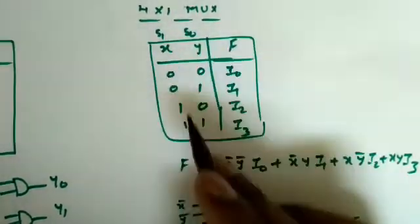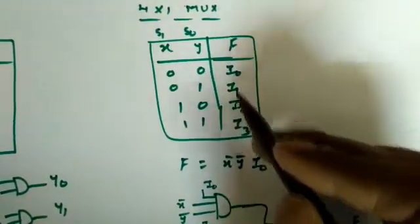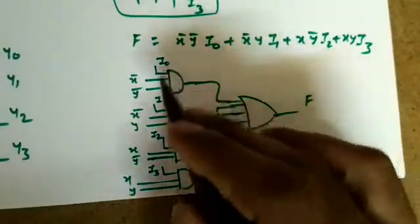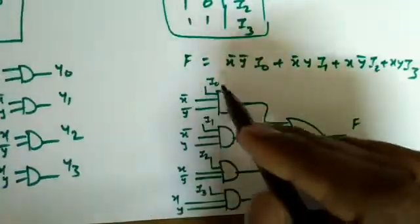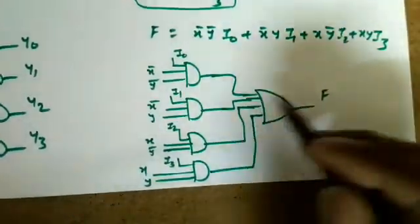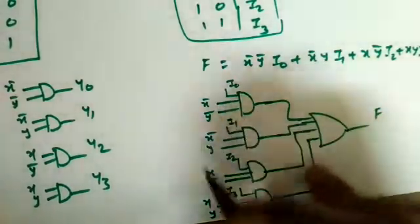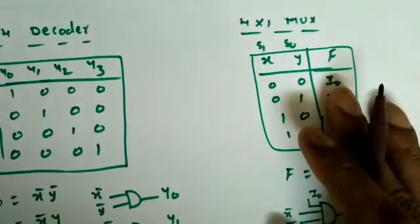This is an example of a 4×1 MUX — four inputs and a single output F. The four inputs are I0, I1, I2, and I3. Looking at the logic diagram, the four AND gates generate the four minterms with respect to the input data, and finally an OR gate sums them. That is why we can implement any boolean function using a multiplexer — it generates minterms and also sums them.